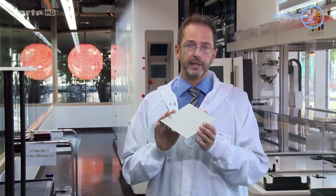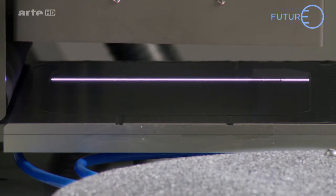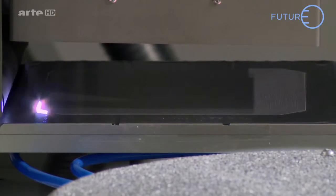Comment arrive-t-on à cela ? Nous utilisons un laser qui crée près de 100 000 points de contact par cellule et qui traverse cette couche diélectrique. C'est de cette manière que nous améliorons le rendement des cellules photovoltaïques.